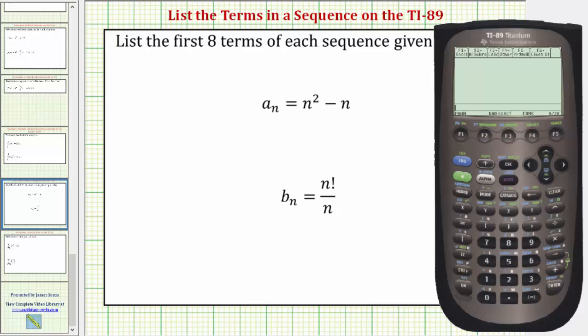Welcome to a tutorial on how to determine the terms of a sequence using the TI-89 graphing calculator. We're asked to list the first eight terms of the sequence given by a sub n and b sub n.